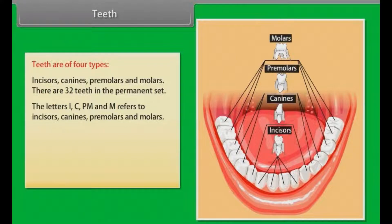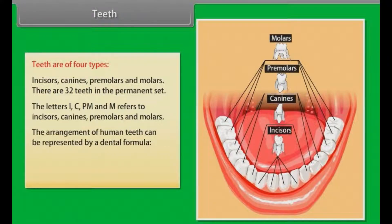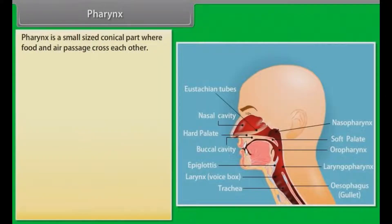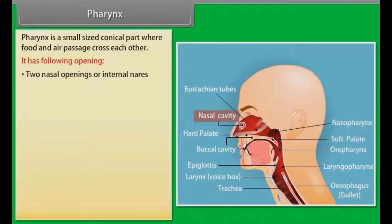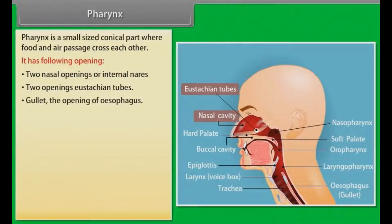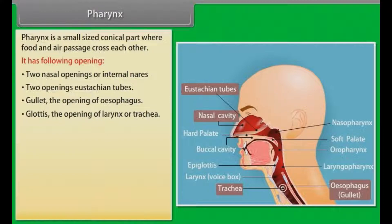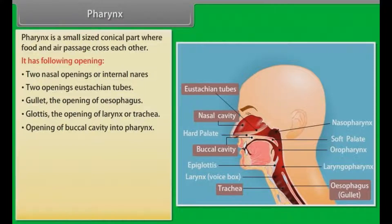The arrangement of human teeth can be represented by a dental formula. Pharynx is a small-sized conical part where food and air passage cross each other. It has the following openings: two nasal openings or internal nares, two openings of eustachian tubes, the gullet or opening of esophagus, the glottis or opening of larynx or trachea, and opening of buccal cavity into pharynx.